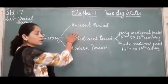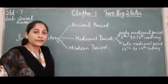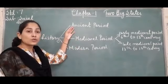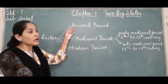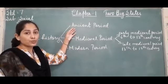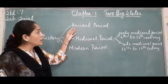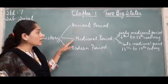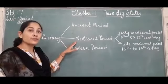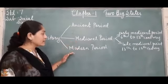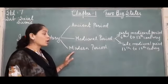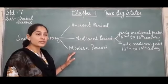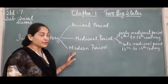The ancient period you had learned in 6th standard — the primitive age, the rules of Indian rulers like Ashoka and Chandragupta Maurya. This year we are going to focus on the medieval period, and in 8th standard you are going to learn about the modern period, that is the arrival of the British in India and further.